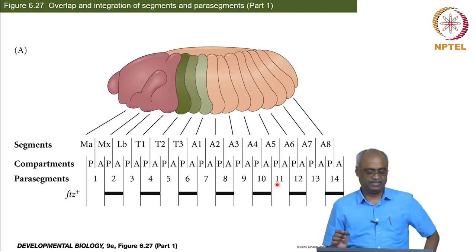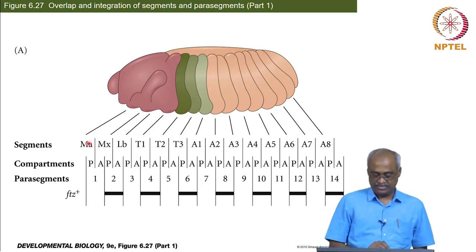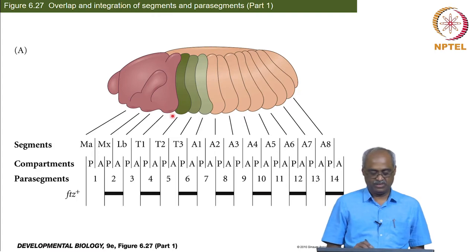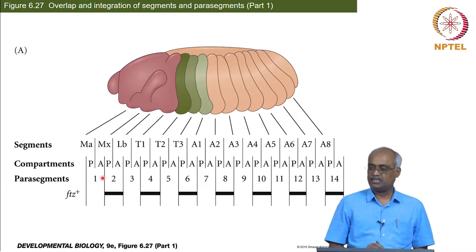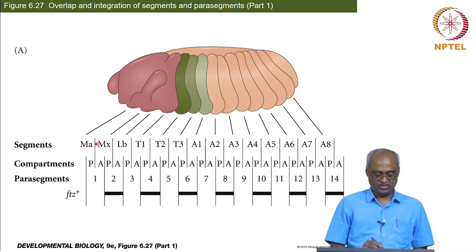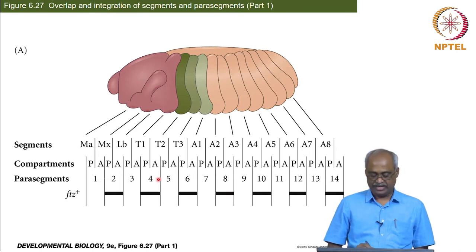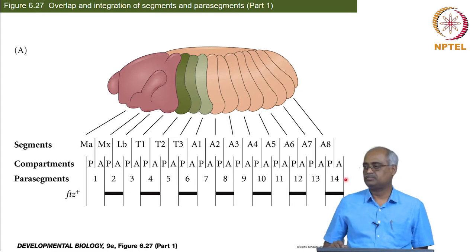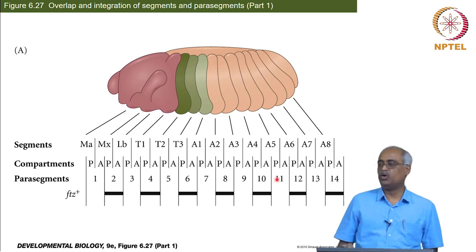The visible morphology has segments — head segments, thoracic segments, abdominal segments — those are the visible body parts. But each para segment actually comprises part of two adjacent segments. For example, the posterior part of the mandibular segment and the anterior of the maxillary segment form one para segment. So you have para segments 1 through 14, and they basically overlap adjacent segments.